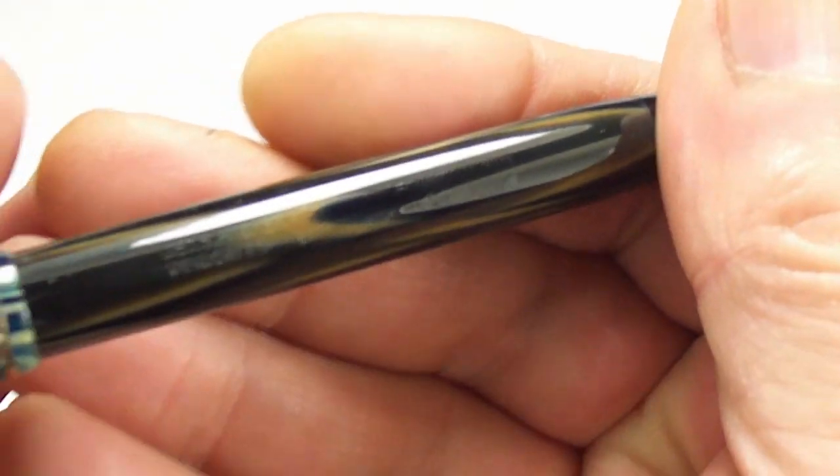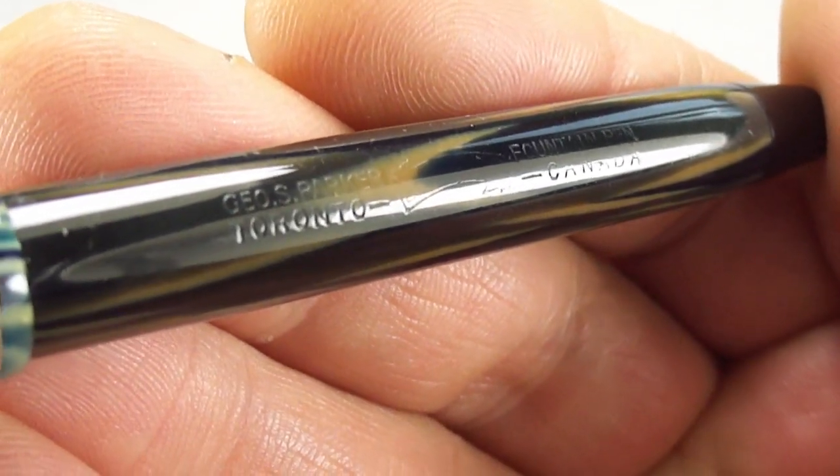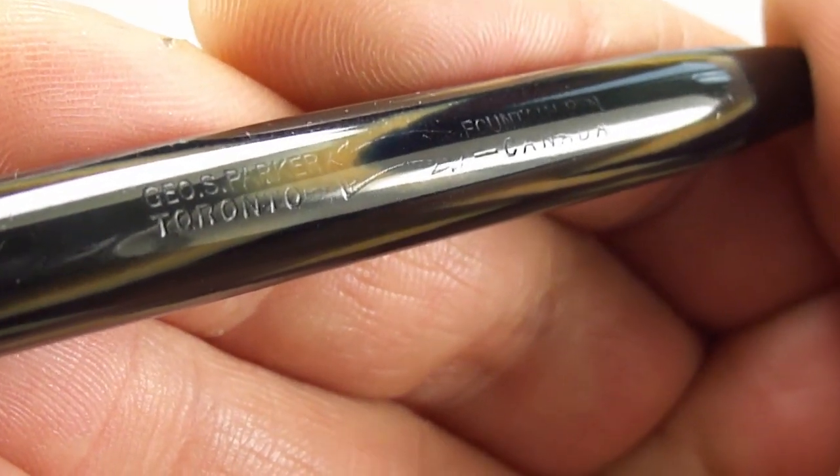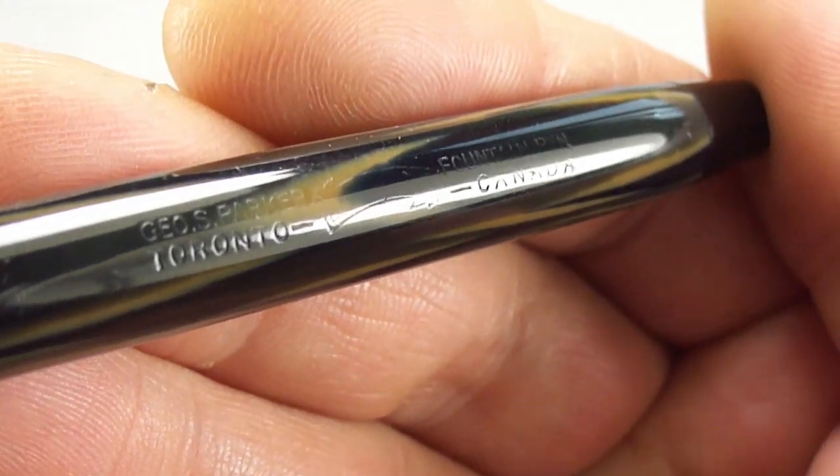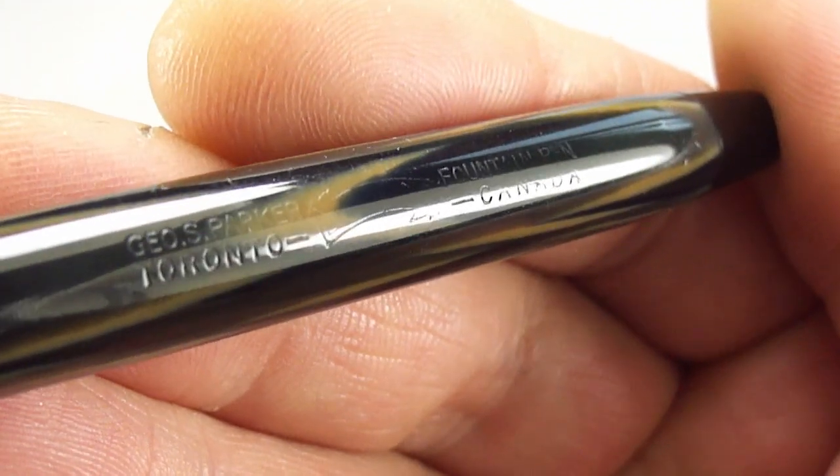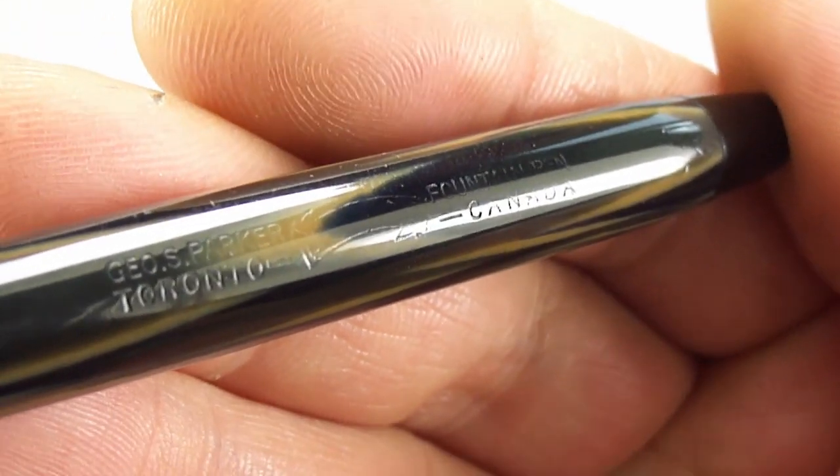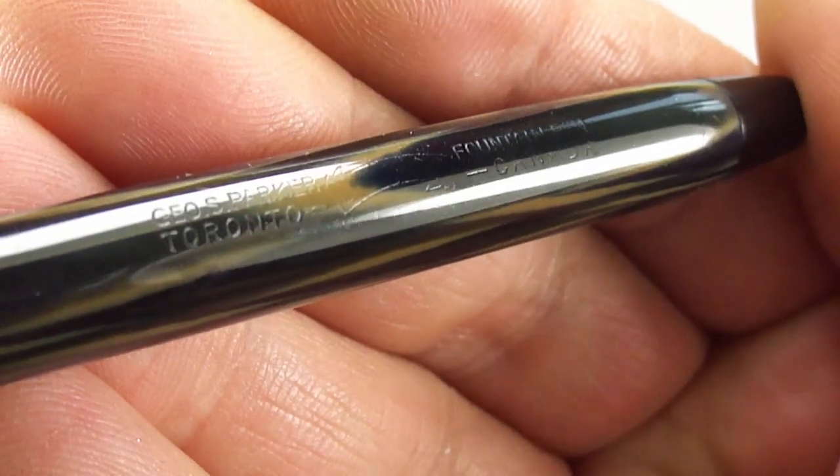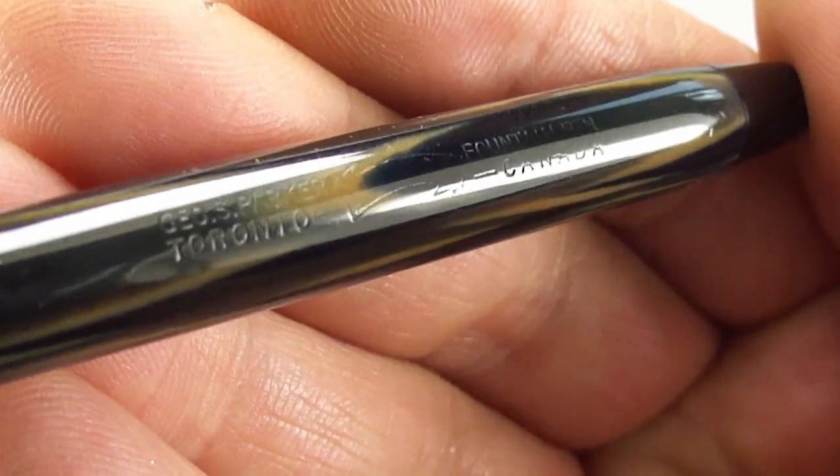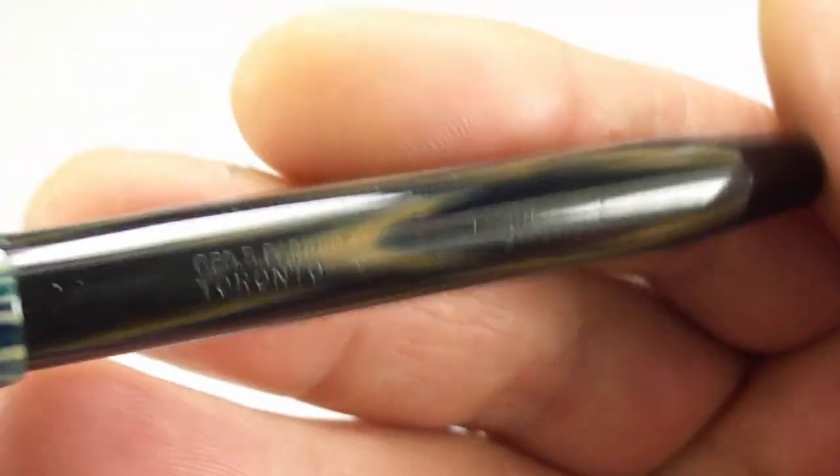Let's show you the barrel imprint. On this one it's actually a little bit worn but you can see to the left it's got Geo S Parker Toronto, then the Lucky Curve banner in the middle is slightly worn, to the right it has fountain pen and then the word Canada underneath. A little bit worn but parts still quite legible, quite acceptable for a pen from the 1920s.